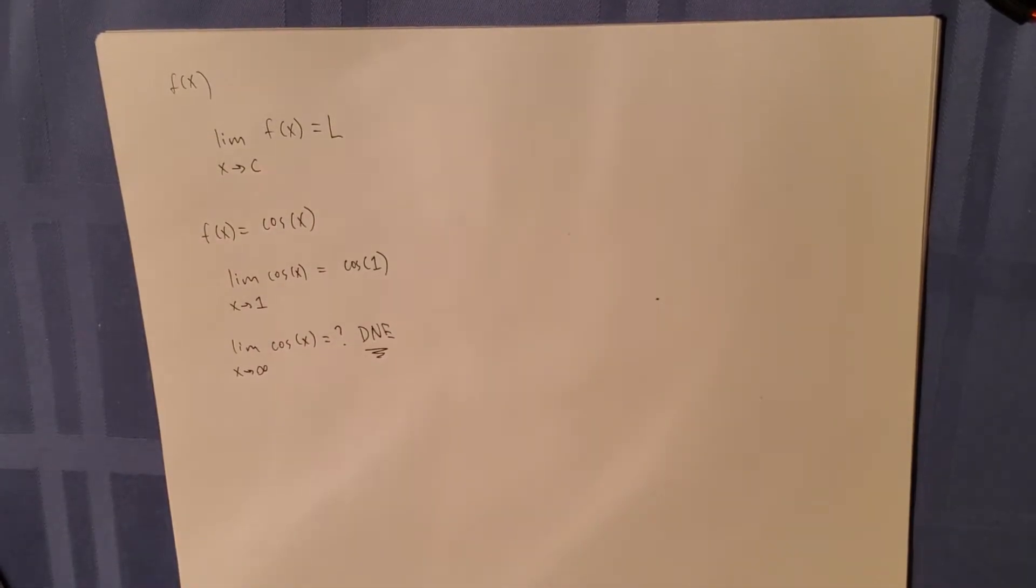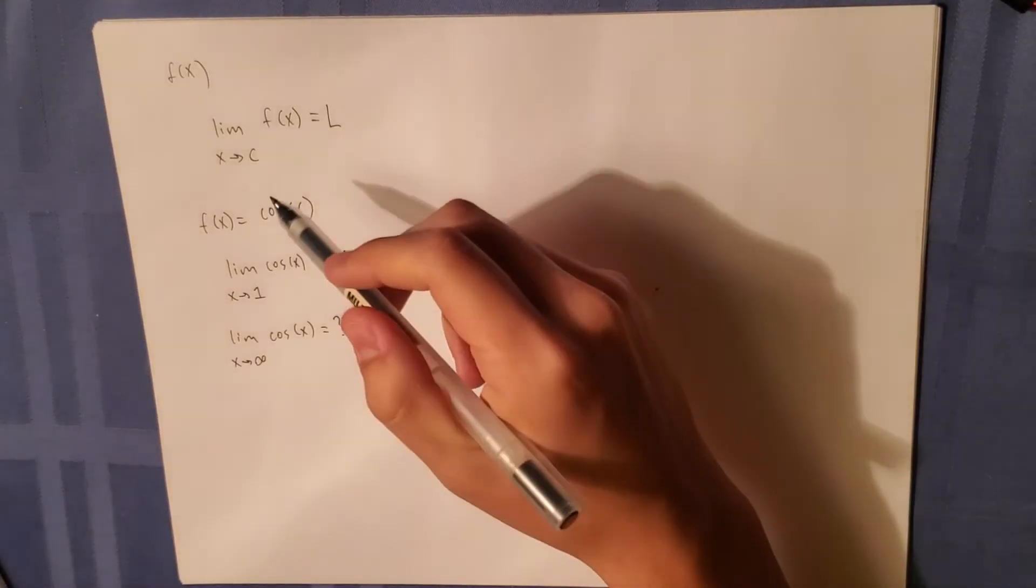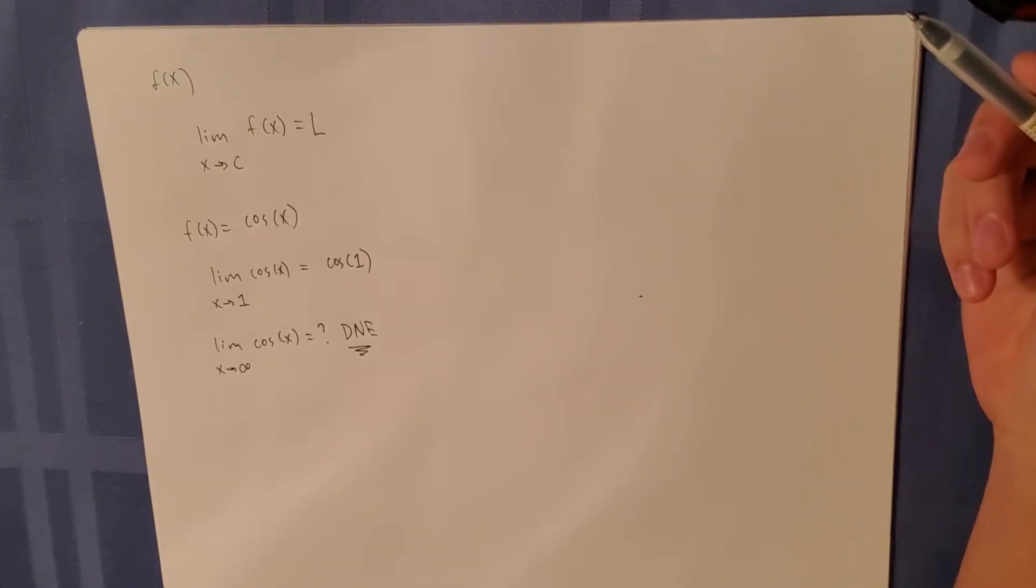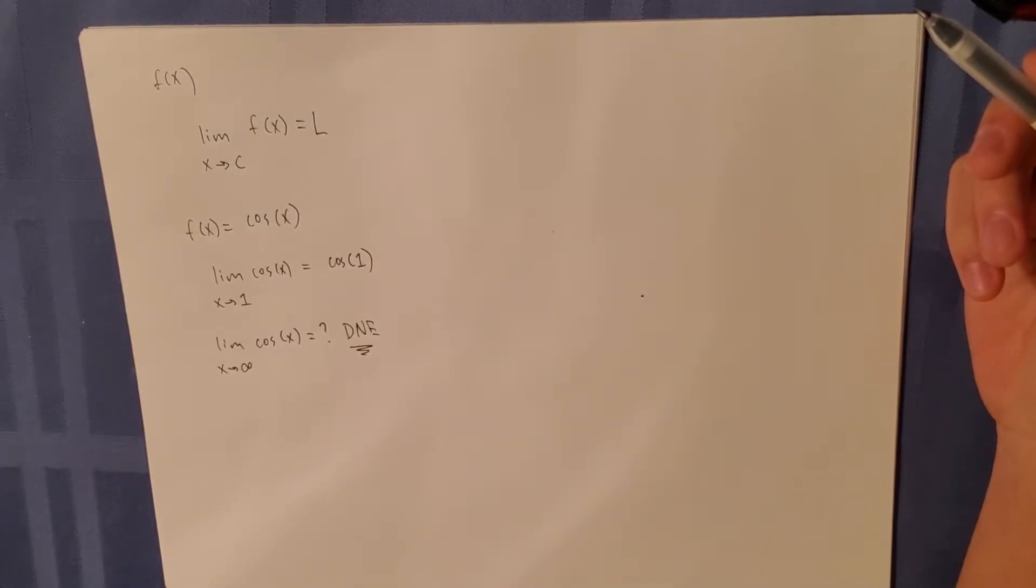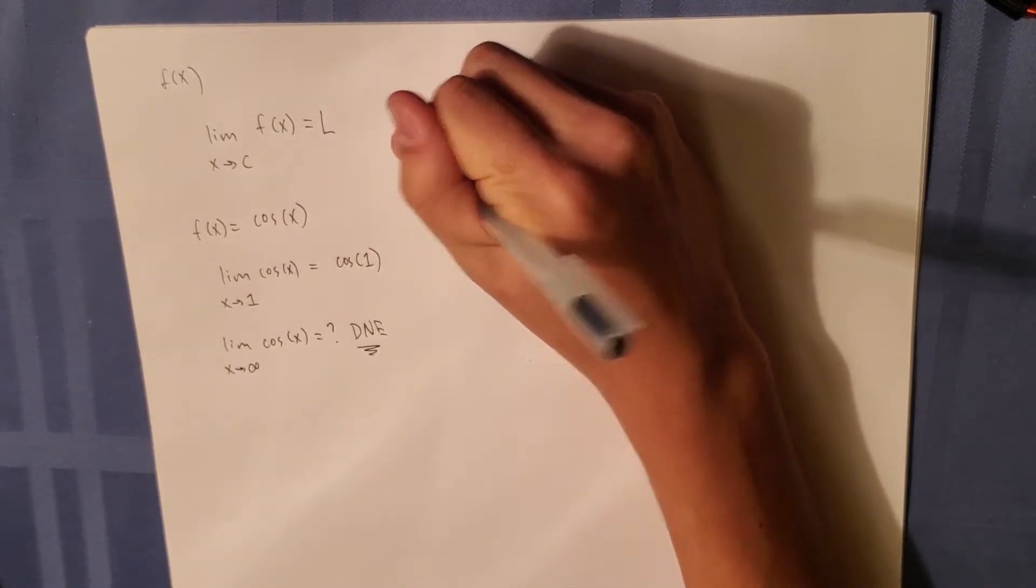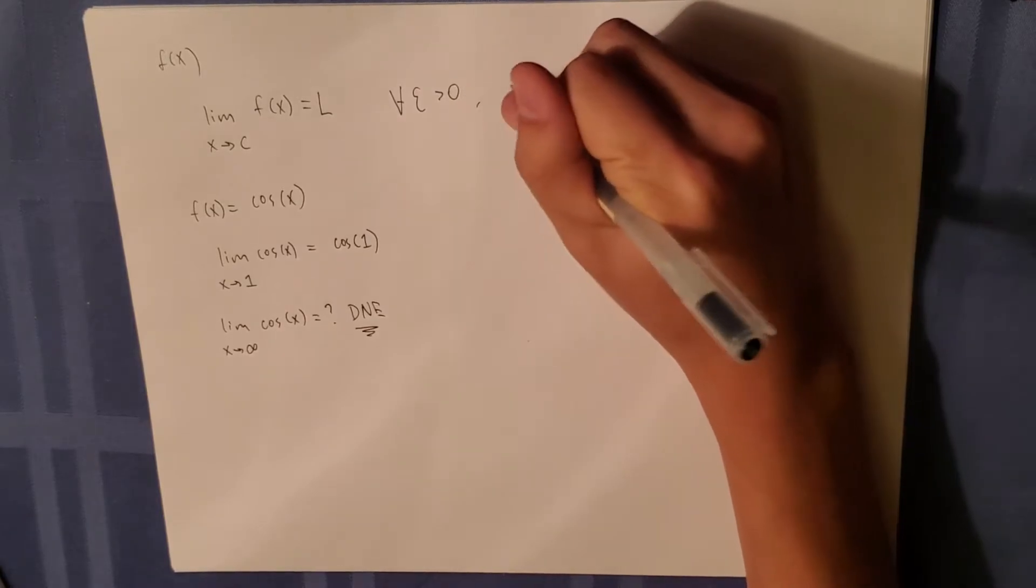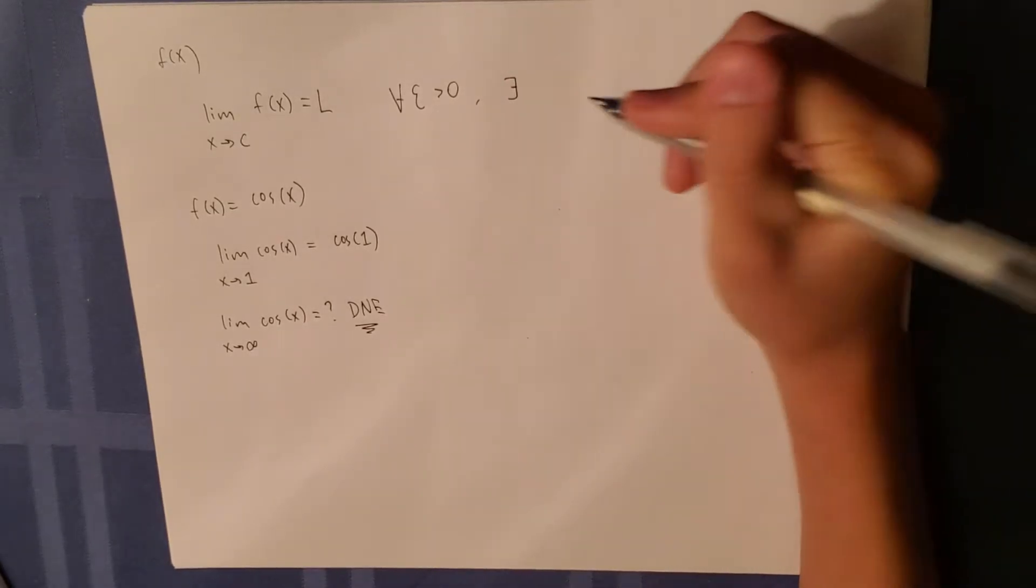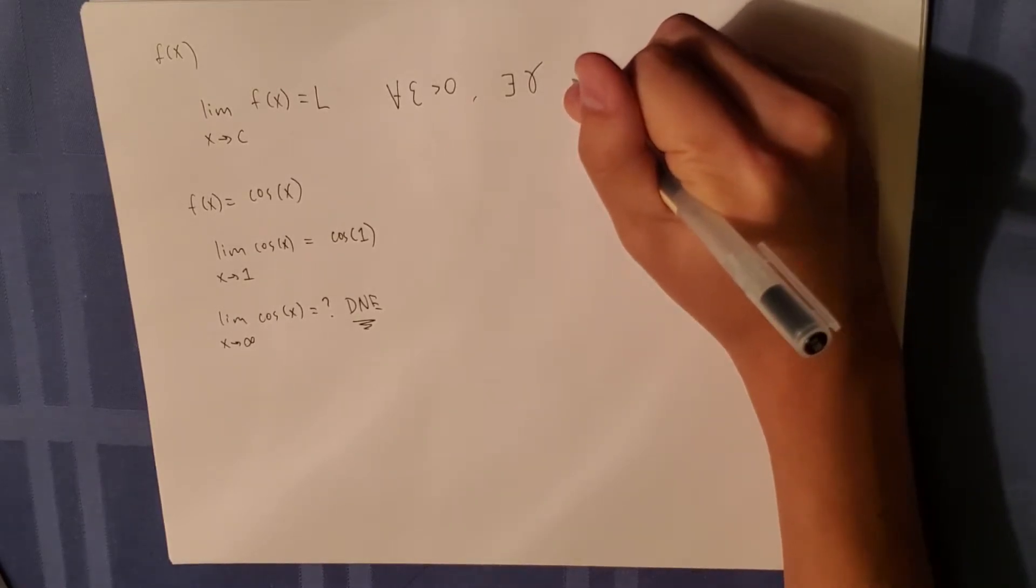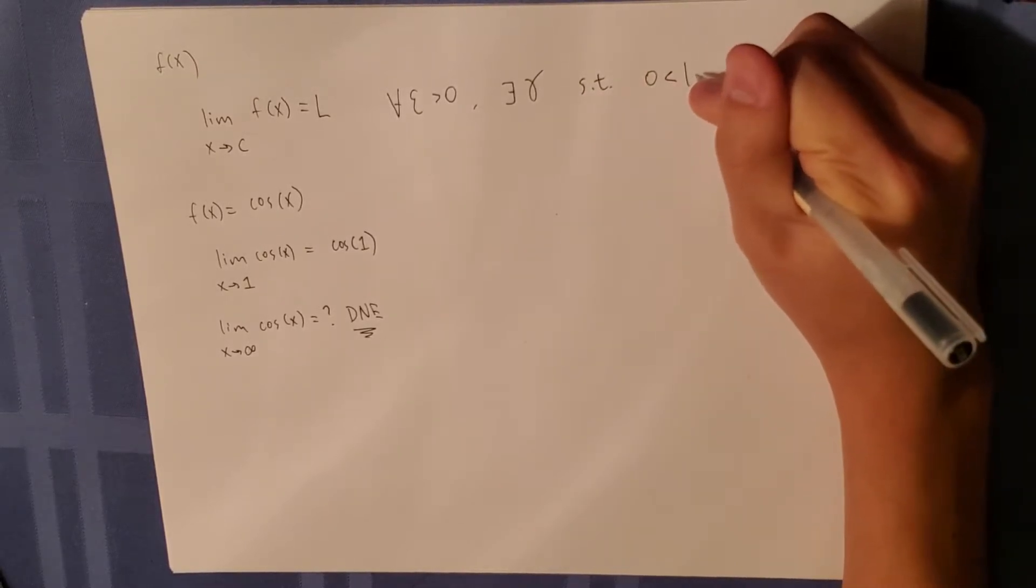So now to the formal definition of a limit. When we say that the limit as x approaches c of a function f of x equals L, we're saying that for any epsilon greater than 0, there exists a delta such that 0 is less than the absolute value of x minus c,